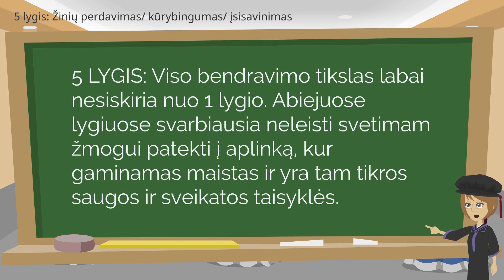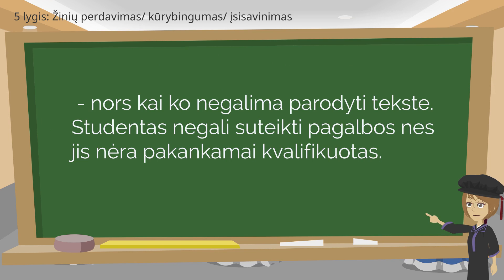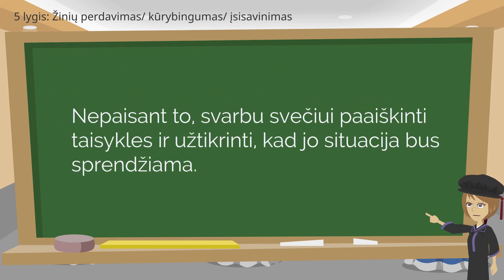The purpose of the whole conversation at this level is not much different than level 1. In both levels, the priority is to prevent an unauthorized person entering the area where food is prepared as it is against the health and safety rules and regulations. However, the conveyance of the idea differs significantly due to the application of communication skills including verbal and physical communication, body language, gestures, choice of words and even intonation. Although some of these cannot be shown in a text version, the student is not able to provide assistance with the problem as he is not qualified. Regardless, it is not about solving the guest's problem, but it is about explaining the rules to him and providing the reassurance that the situation will be handled.